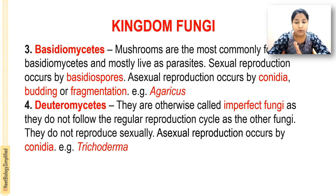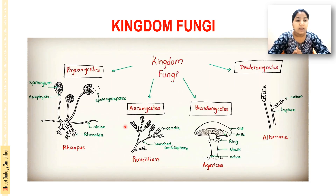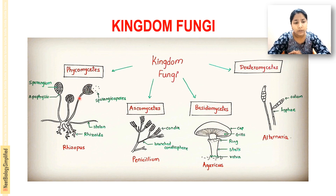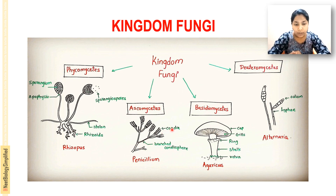Looking at the slide: the four classifications are Zygomycetes (or Phycomycetes), Ascomycetes, Basidiomycetes, and Deuteromycetes. In Zygomycetes, sporangiospores are usually formed in a sac-like structure called sporangium; examples are Rhizopus and Mucor. In Ascomycetes you can see conidia — branched conidia spores in chains.